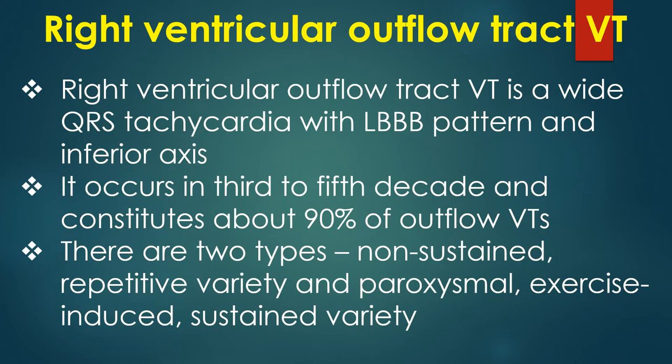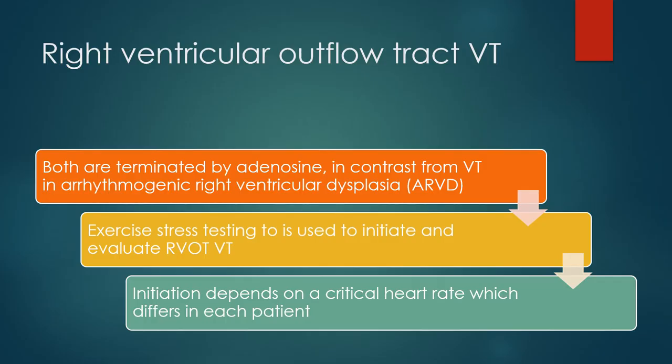Right ventricular outflow tract VT is a wide QRS tachycardia with LBBB pattern and inferior axis. It occurs in the 3rd to 5th decade and constitutes about 90% of outflow VTs. There are two types: non-sustained repetitive variety and paroxysmal exercise-induced sustained variety. Both are terminated by adenosine, in contrast to VT in arrhythmogenic right ventricular dysplasia. Exercise stress testing is used to initiate and evaluate RVOT VT.